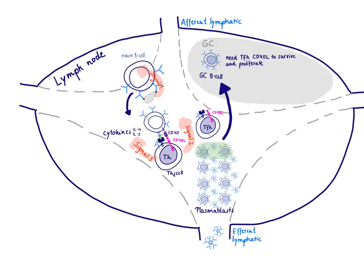A germinal center, abbreviated here as GC, is the site where mature B-cells proliferate, differentiate, and mutate their antibody genes. Importantly, once these lucky B-cells become germinal center B-cells, they need to be provided a survival signal from time to time, because otherwise they're going to commit suicide and die by apoptosis.